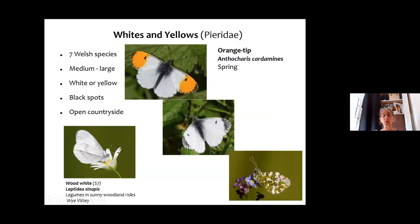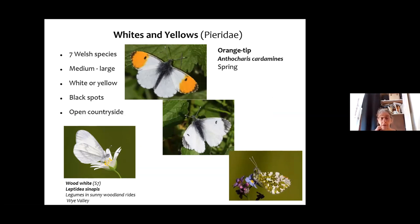We've got three families in Wales but divided them into five groups to help you identify them. We'll start with the whites and yellows — white butterflies that everybody knows at least some of. They are butterflies of the wider countryside. And you can see the orange-tip, a beautiful harbinger of spring — the male has orange spots on its wings, unmistakable. I'll show you coming up how you tell the difference between the female and the other whites.